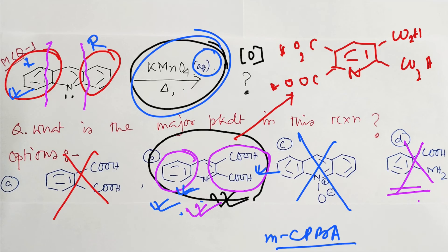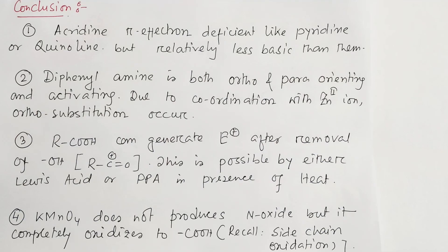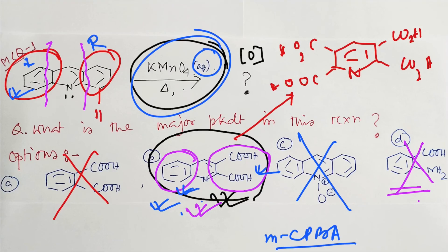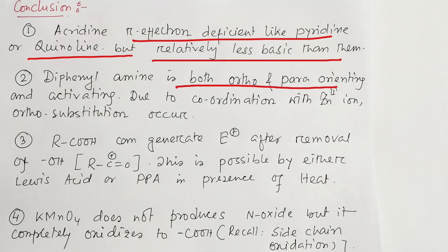In summary: acridine is a π-deficient molecule like pyridine and quinoline, but relatively less basic than them. Pyridine is less bulky; quinoline has one benzene on one side; acridine has benzene on two sides — the benzene rings donate electron density and reduce nitrogen's electron deficiency. The basicity reduction is mainly electronic, but there is also steric interference from the two flanking hydrogens when the nitrogen lone pair tries to react or donate.